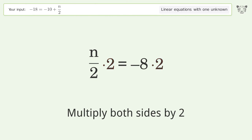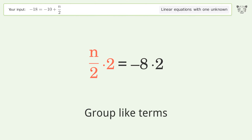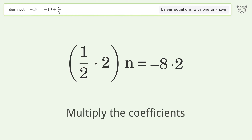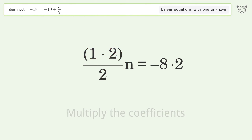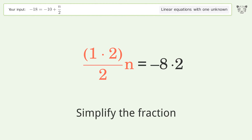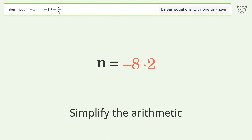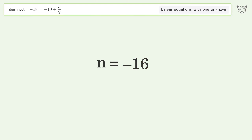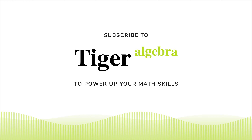Isolate n by multiplying both sides by 2, group like terms, multiply the coefficients, simplify the fraction, and simplify the arithmetic. And so the final result is n equals negative 16.